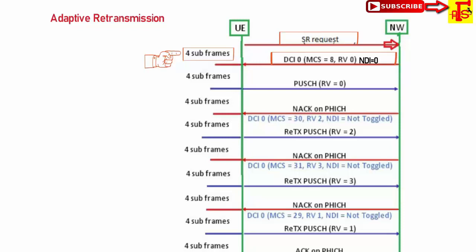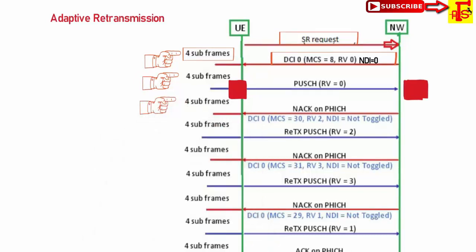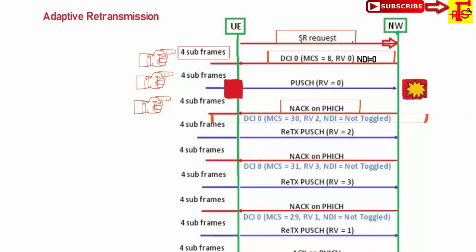In DCI-0, MCS and RV values are defined for the first transmission. Once the network sends the grant message, plus 4 subframes later the UE starts data transmission on PUSCH. For this first transmission, RV equals 0, as the network had already set RV 0 and NDI bit 0 in DCI-0. After plus 4 subframes the network sends HARQ feedback. If the network cannot decode the packet, it transmits NACK on PHICH along with DCI-0 carrying MCS, RV, and NDI bit.